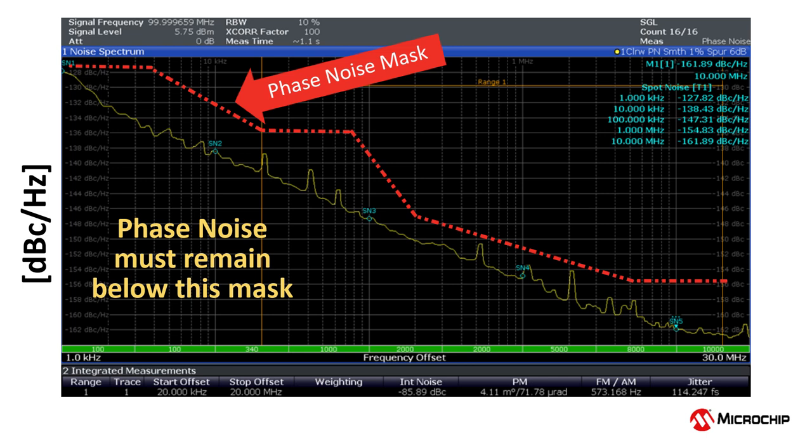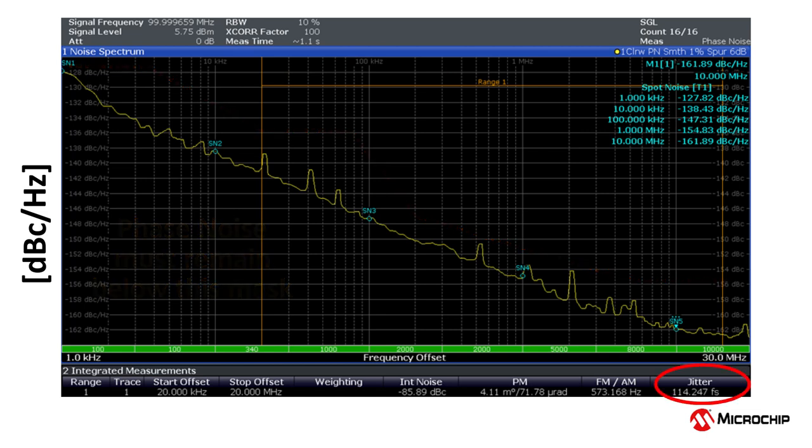Besides being used to determine whether a mask requirement is met, phase noise measurements can also be used to calculate clock jitter.